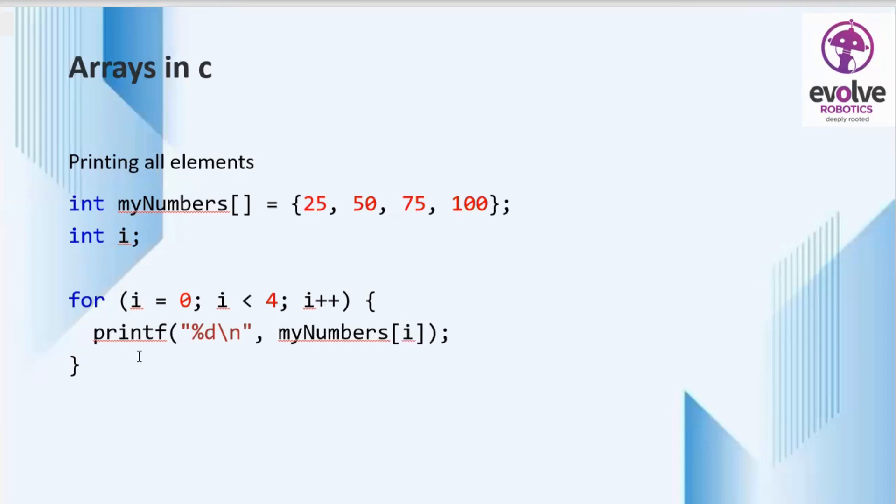Inside the for loop we are using the printf function for printing. So printf percent d slash n for myNumbers[i]. So the output will be all the elements in the array. So 25, 50, 75, 100 will be printed in the output.